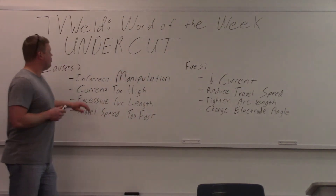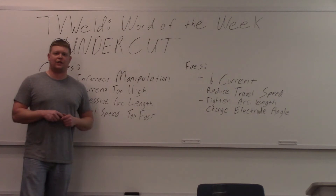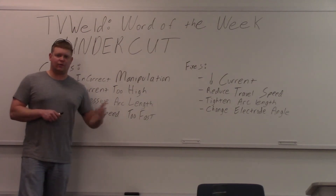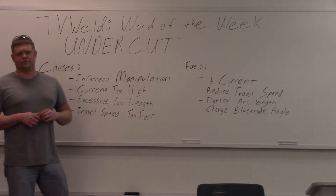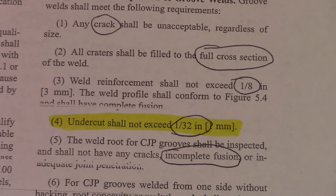This is a very important welding discontinuity to know. We're going to look at the D1.1 structural steel welding code and see how much undercut you're actually allowed to have. Undercut shall not exceed 1/32nd of an inch. That is not very much. So if you're in school or on a job and your whole toe is full of undercut, you're not even close — it's a 32nd of an inch.